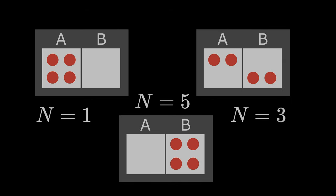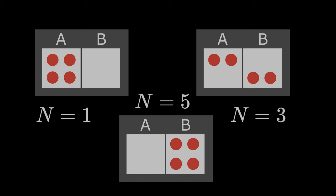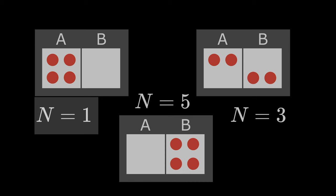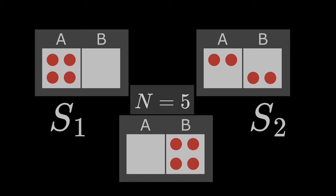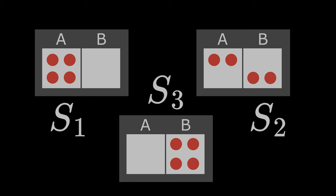Which of the three systems has the maximum and minimum entropy? The first system has a single microstate and therefore the lowest entropy, S1. The second system has three possible microstates and therefore a higher entropy, S2. The third system has five possible microstates and therefore the highest entropy, S3.